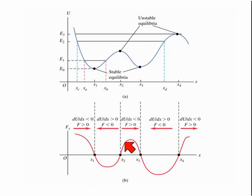So x2 and x4, for that matter, are positions of unstable equilibrium.